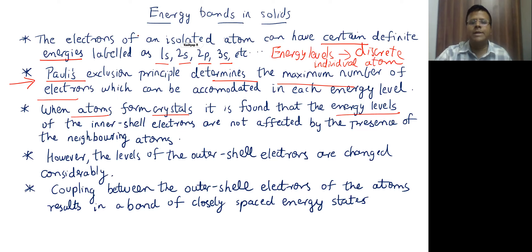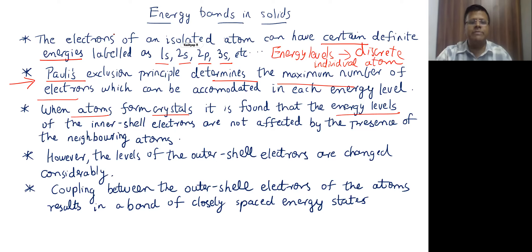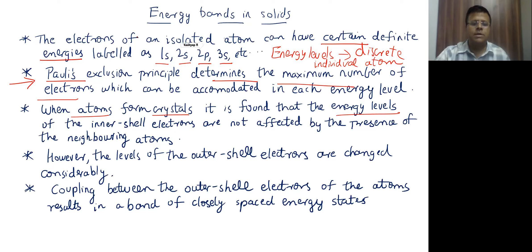Pauli's exclusion principle says that no two electrons in the same atom can have identical values for all their quantum numbers. In individual atoms we have discrete energy levels, but when atoms come close and interact through their outer shells, the energy levels spread out and form energy bands. We will draw a diagram to make that part more clear. Is it understood why energy has to spread out in the form of energy bands?